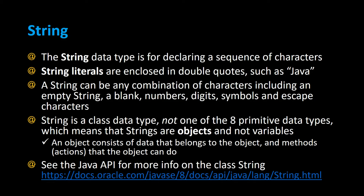The string data type is for declaring a sequence of characters. String literals are enclosed in double quotes, such as Java with double quotation marks around the word Java. A string can be any combination of characters including an empty string, a blank, numbers, digits, symbols, and escape characters.